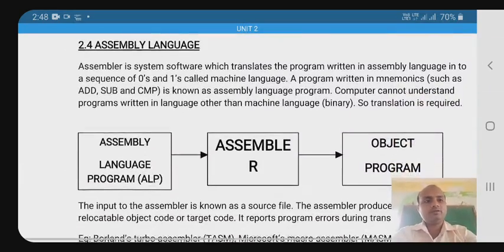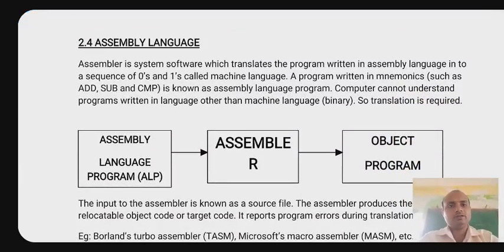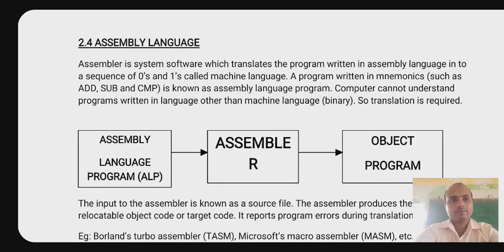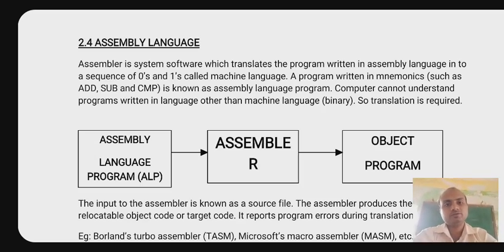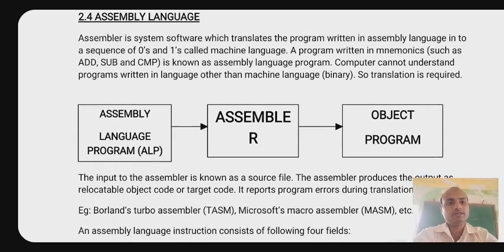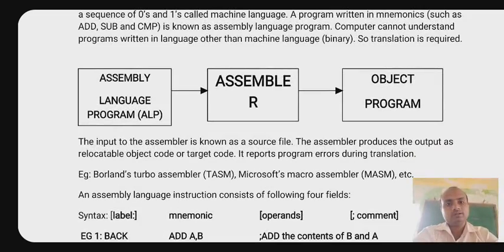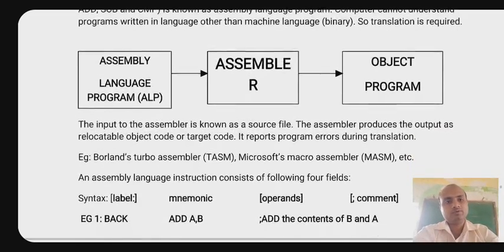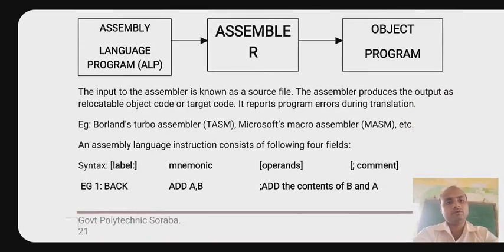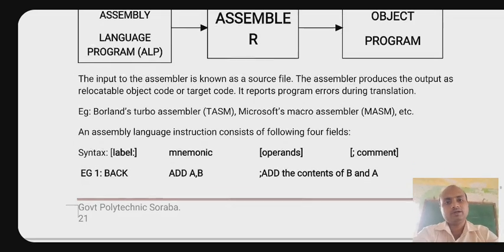An assembler is a system software which translates the program written in assembly language into a sequence of zeros and ones called machine language. It converts a source file into an object program. Borland's TurboAssembler and Microsoft's MacroAssembler are examples of assemblers.